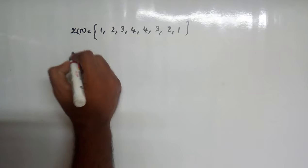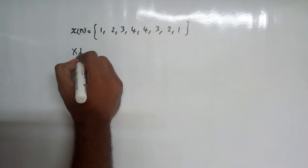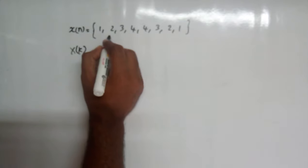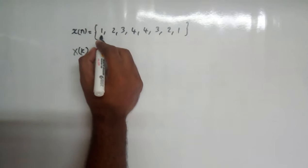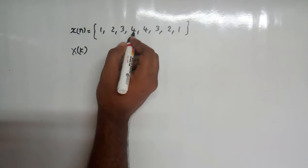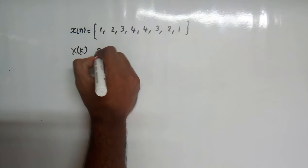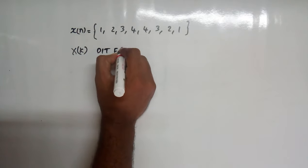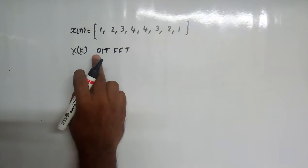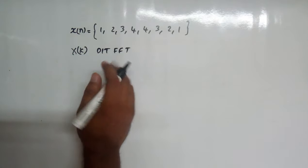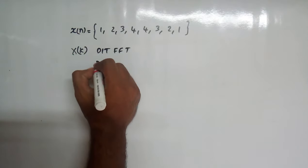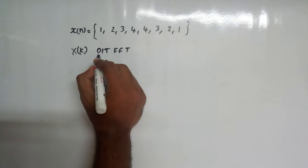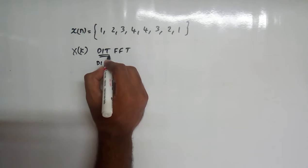Today we are going to find X(k) for the given question x(n) = {1, 2, 3, 4, 4, 3, 2, 1} using the DIT-FFT algorithm. There are two methods: DIT-FFT and DIF-FFT. We are going to deal with DIT-FFT.